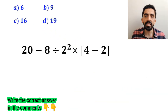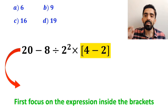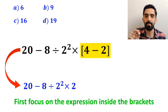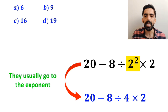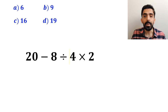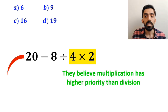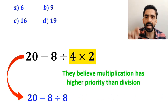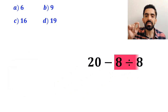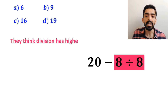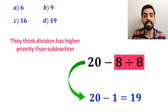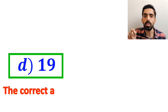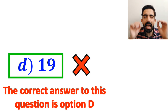Also, some other people when solving this question first focus on the expression inside the brackets and replace the whole expression with 20 minus 8 divided by 2 squared multiplied by 2. In the next step, they go to the exponent and simplify it to 20 minus 8 divided by 4 multiplied by 2. Then they perform the multiplication between 4 and 2, believing multiplication has higher priority than division, rewriting the expression as 20 minus 8 divided by 8. In the final step, they focus on the division between the two 8's and replace this expression with 20 minus 1, which equals 19, concluding that option D is the correct answer. However, this answer is absolutely wrong.